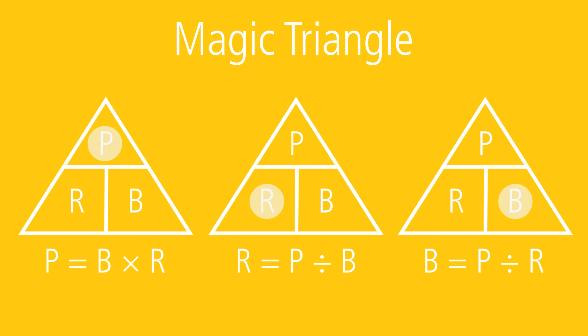The rate is the variable that describes what part of the base is represented by the portion. It is always the term with the percent sign. When solving for the rate, your answer will be a decimal. Be sure to convert the decimal to a percent by moving the decimal point two places to the right and adding a percent sign. We use the formula rate equals portion divided by base (R = P ÷ B).